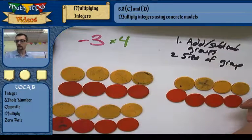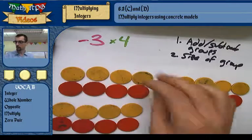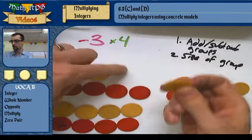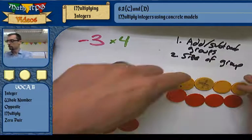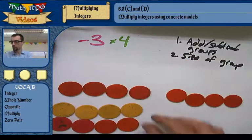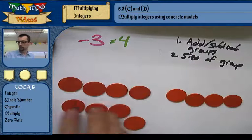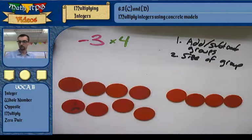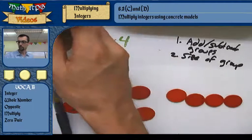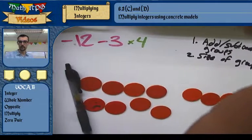Now I'm going to take away 3 groups of 4. Here's one group of 4 — I take them away. Here's another group of 4 — I take them away. And here's another group of 4 — I take them away, which leaves me with negative 12.